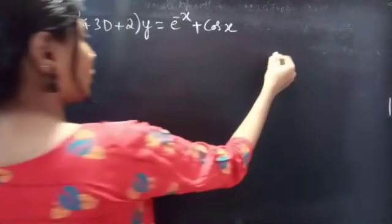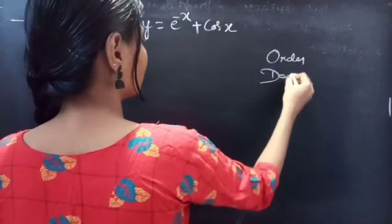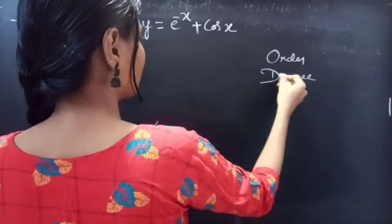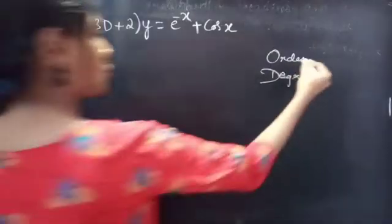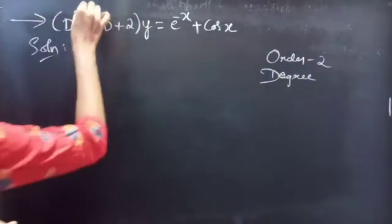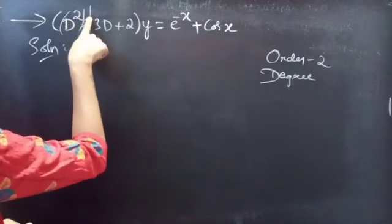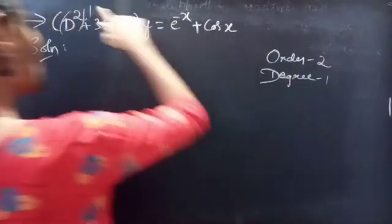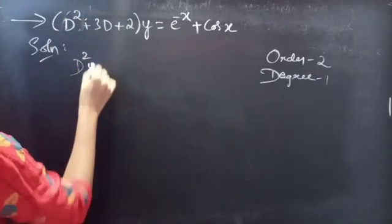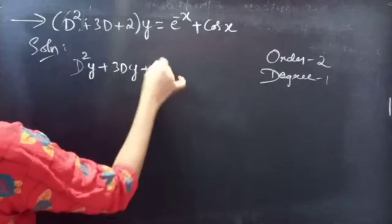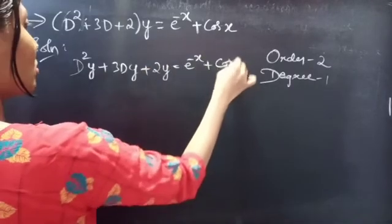Firstly, let's find the order and degree of the given differential equation. Identify the highest derivative here. D² is the highest derivative, so order will be 2, and the highest power of the highest derivative is the degree. Degree is 1. Or just write the given equation as D²y + 3Dy + 2y = e^(−x) + cos x.